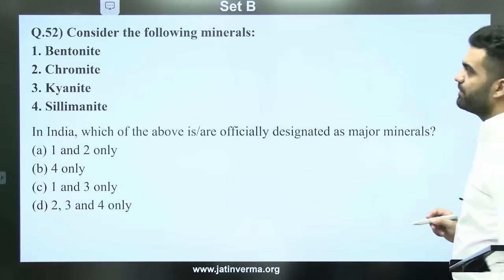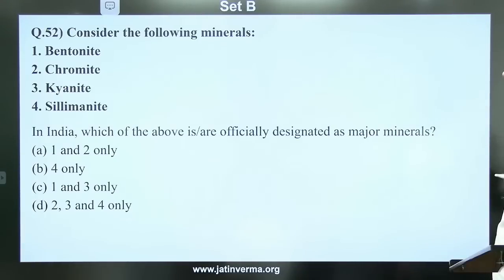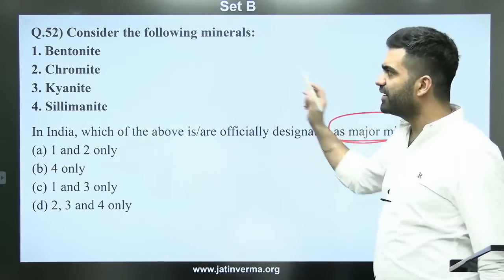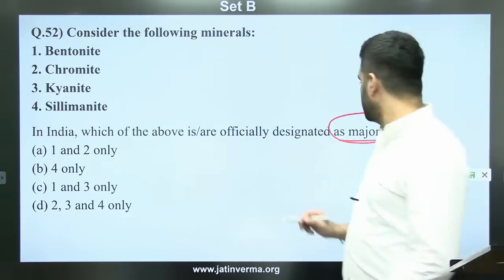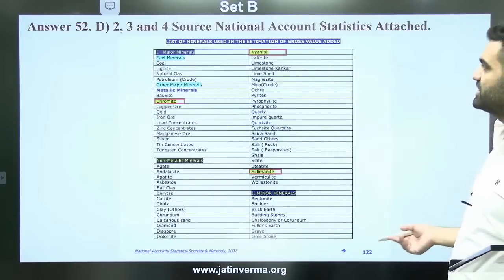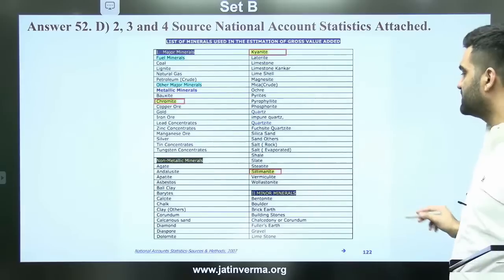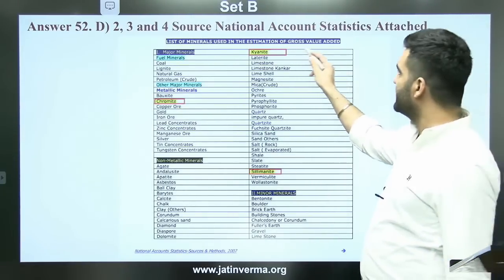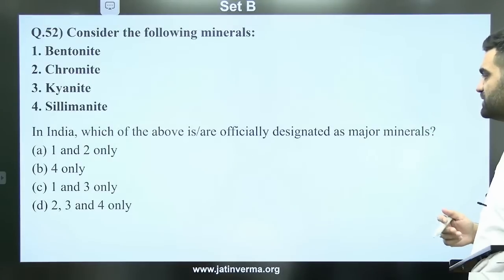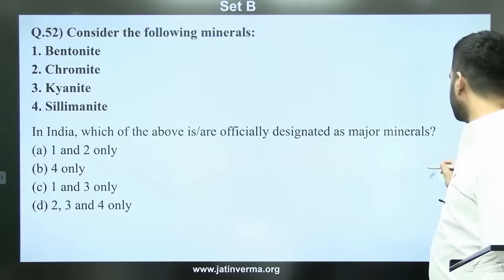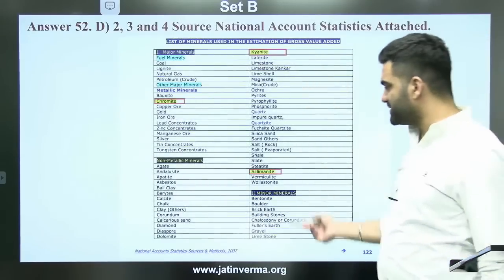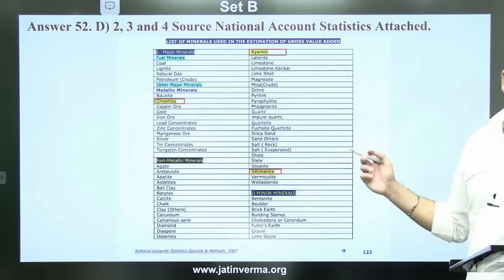Question 52: Consider the following minerals — bentonite, chromite, kyanite, and sillimanite. Which of these are officially designated as major minerals in India? This question was asked in the context of banning imports from China. These minerals are listed in the national account statistics for estimation of Gross Value Added (GVA). The answer is 2, 3, and 4 — chromite, kyanite, and sillimanite.